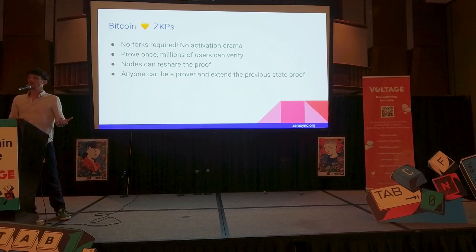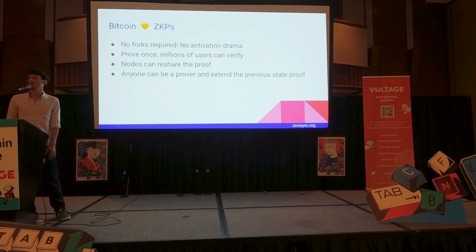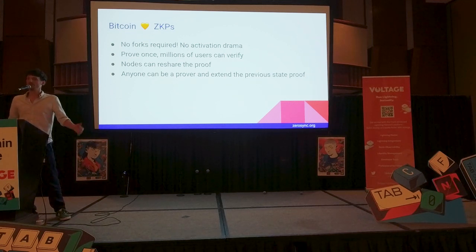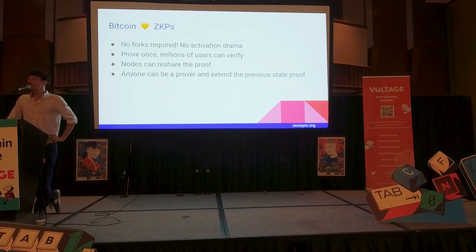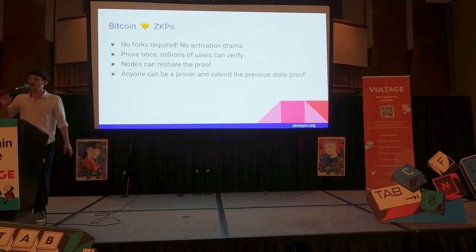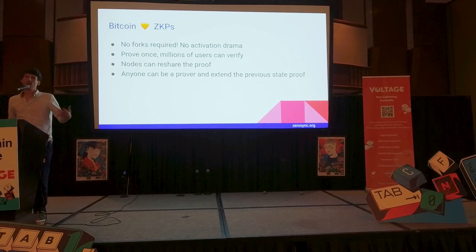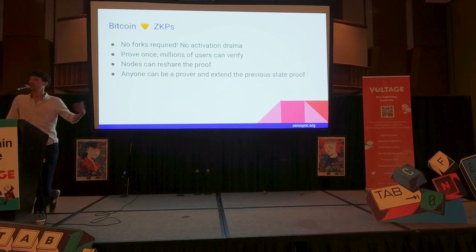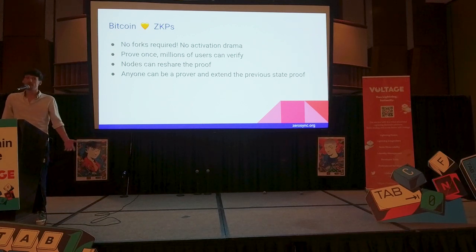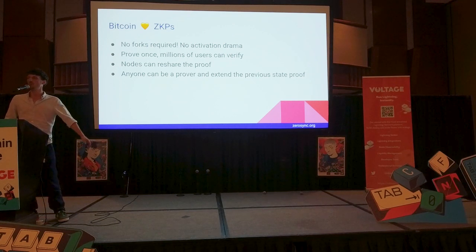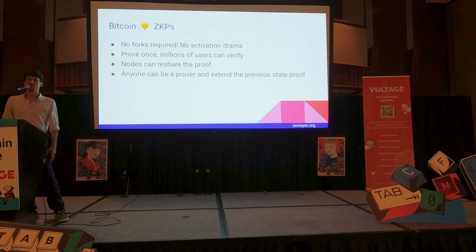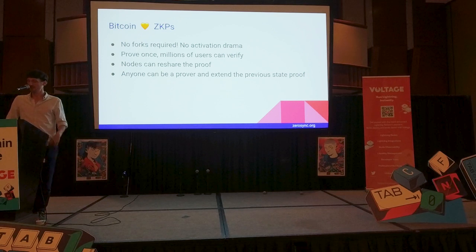Nodes can reshare that proof easily, so you don't have to have any connection with the original prover. I just give you a proof, and it doesn't matter if I proved it myself — you can just verify that it's correct, and if it's correct, it's correct, and it doesn't matter who proved it. And also, anyone can become a prover. I could prove the chain up until now, and you can extend that proof with the next block if you want. You don't have to ask anyone for permission — you can just do it permissionlessly as you wish.